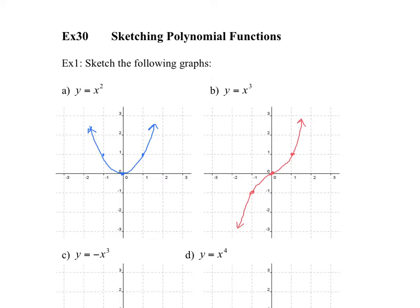This is the general shape for anything raised to an odd exponent, so x to the power of 5 would look like this, x to the power of 7, and so on.